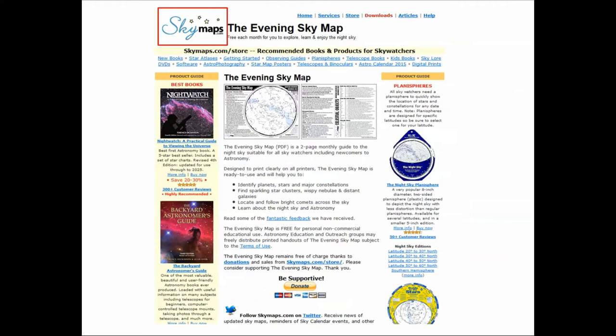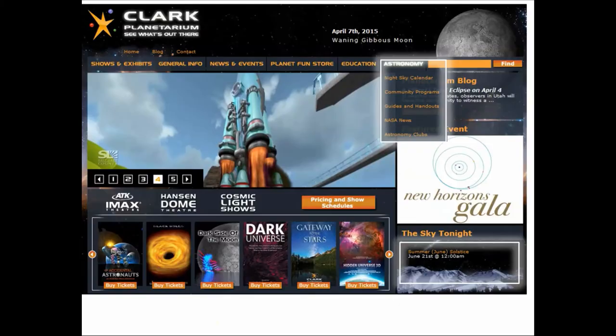Probably the best place I would suggest to get a sky map is at perfectly named skymaps.com. They'll give you a very detailed month by month map of the night sky.